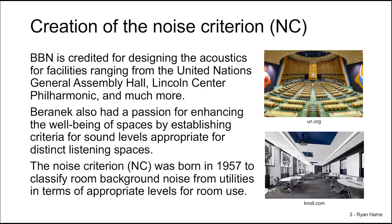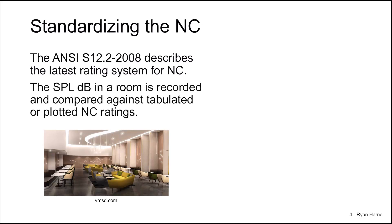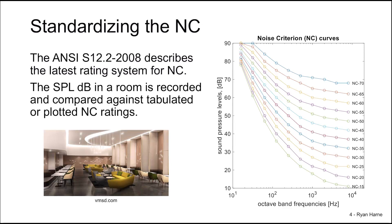After World War II, acoustics inside spaces changed with the advent of air conditioning and the introduction of other mechanical equipment. So the noise criterion was born in 1957 under the guidance of Dr. Baranek, and this classifies how the background room noise from utilities creates appropriate use of the space. The NC was standardized in the ANSI S12.12, which describes the latest rating system for the noise criteria, NC. The SPL in decibels in a room is recorded and compared against tabulated or plotted NC ratings.